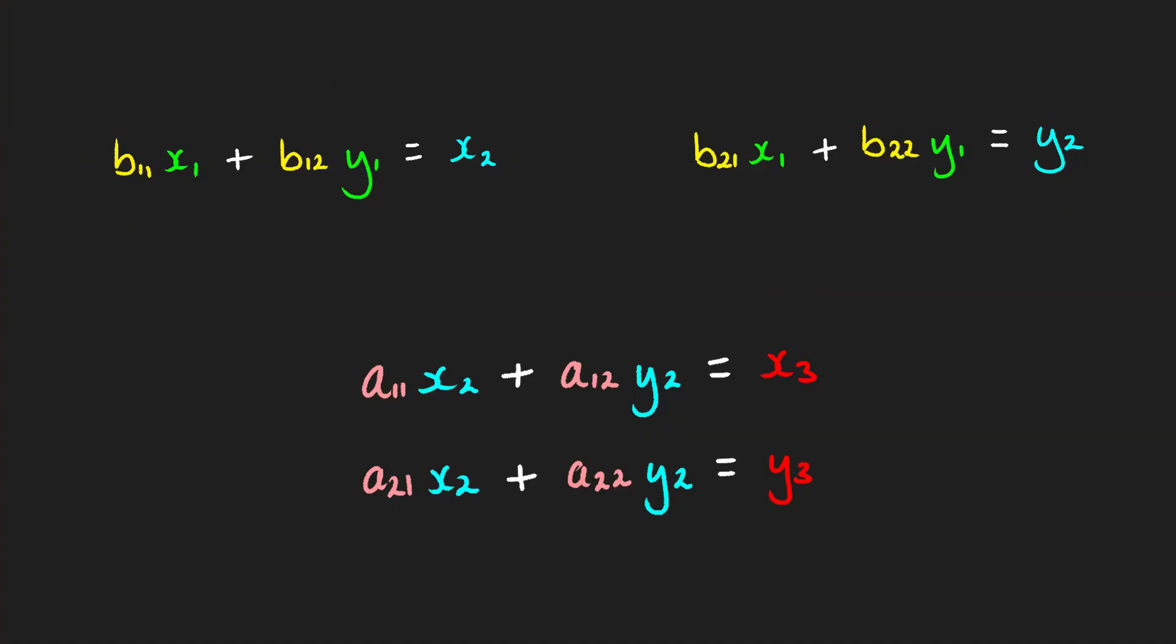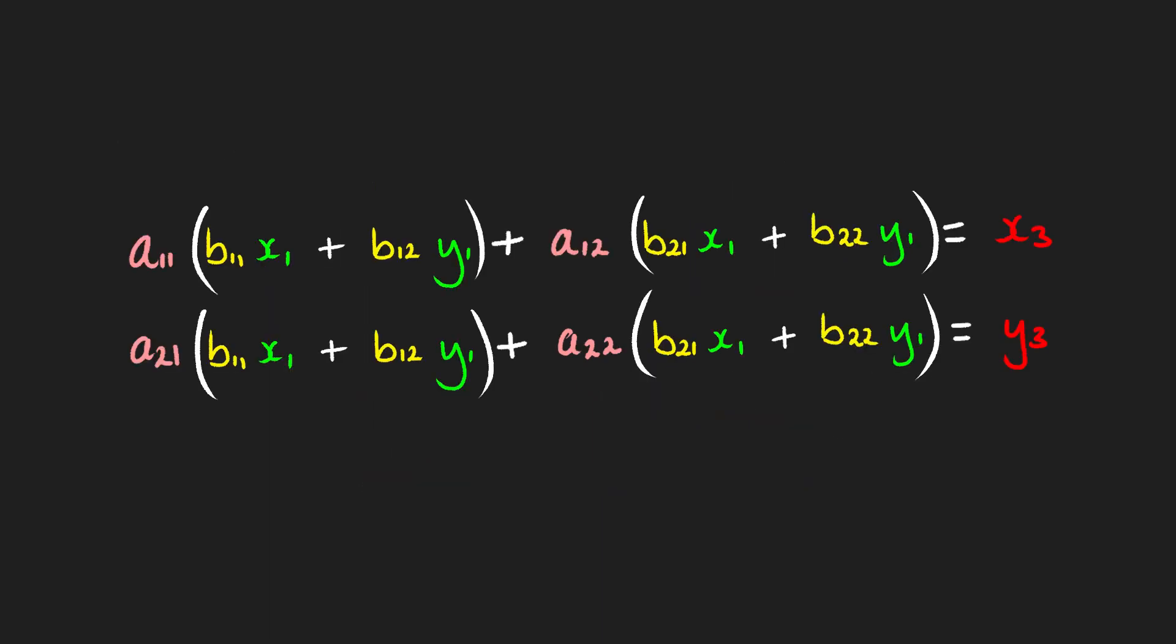To do this, let's sub in the values of x2, y2 into the linear equations involving x3 and y3. So what we've done now is we've just subbed in x2, y2 into the x3, y3 simultaneous equations.